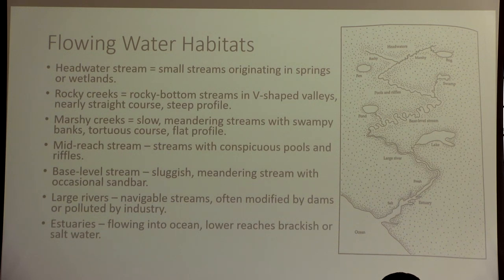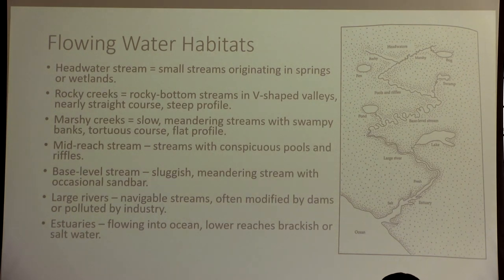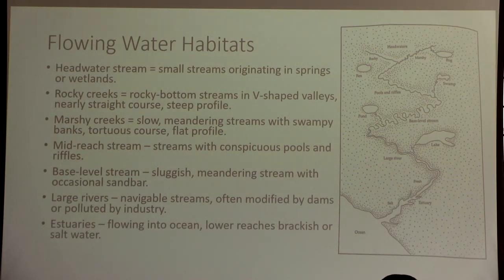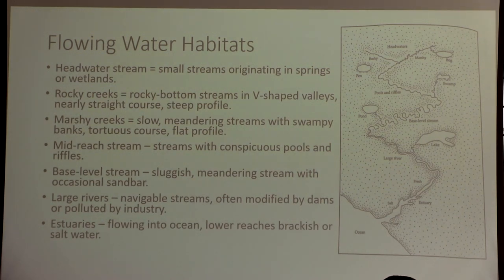Mid-reach streams have conspicuous pools or riffles — sections where the current is deflected over rocks, kind of like a ladder going down. These have a lot of diverse habitat. When you have a mid-reach stream you have pools that can create snail habitat. Base-level streams are a lot more sluggish and meandering — more twists and turns. Between base level and large rivers is where we see a lot of sediment buildup and deposit.